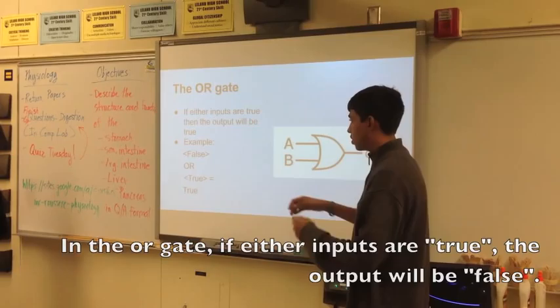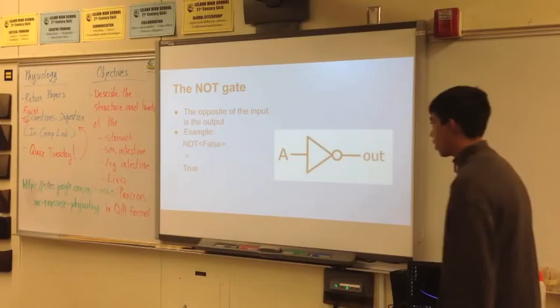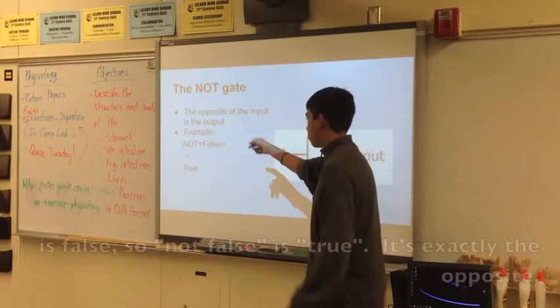What's the source? So, the AND gate here takes in 2 inputs. If both are true, then it'll output true. An example would be: if one of them is false and the other one is true, it'll output false.